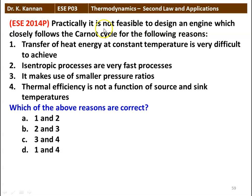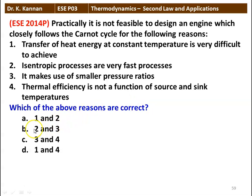Next question: Practically it is not feasible to design an engine closely following the Carnot cycle for the following reasons: (1) Transfer of heat energy at constant temperature is very difficult to achieve; (2) Isentropic processes are very fast; (3) It makes use of smaller pressure ratio; (4) Thermal efficiency is not a function of source and sink temperature. Which reasons are correct? The answer is 1 and 2. Transfer of heat energy at constant temperature is very difficult to achieve, and isentropic processes are very fast. The other two reasons are not correct.